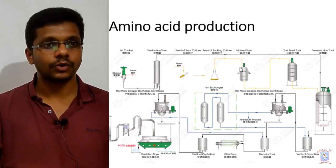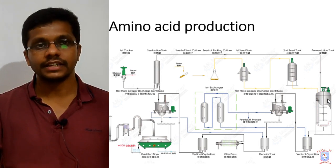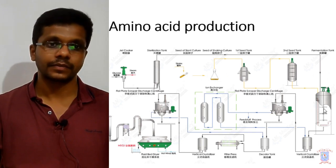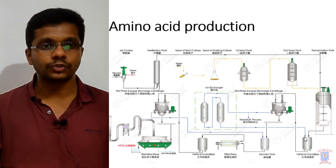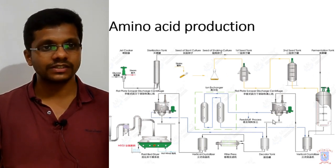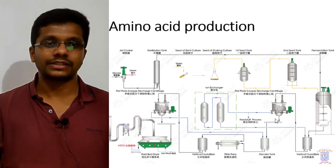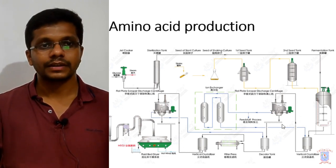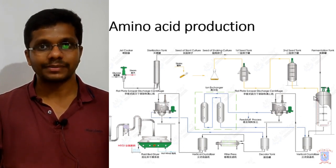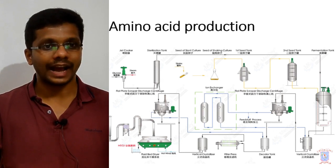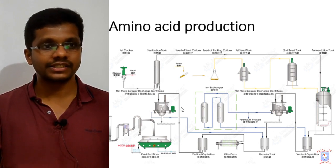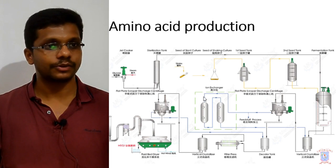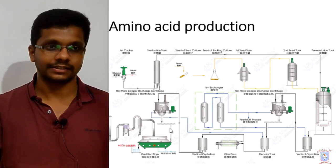So in the fermenter we have the inoculum and the sterilized raw materials. After the fermentation it goes to the downstream processing — the production isolation and purification step. After fermentation it goes to the isolation and purification part, where a variety of methods are used for the product extraction.